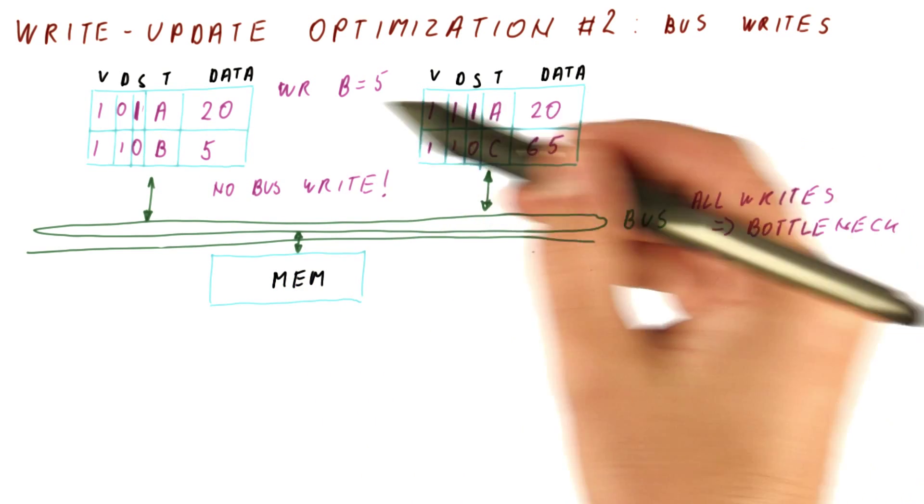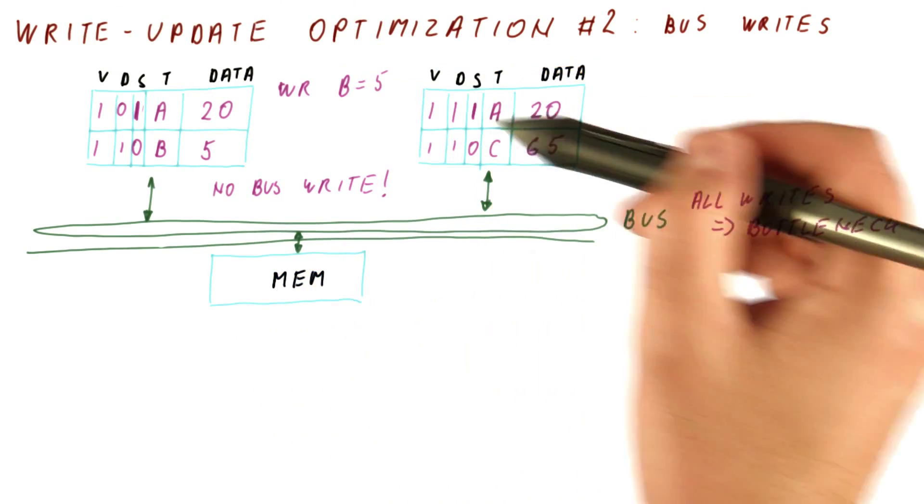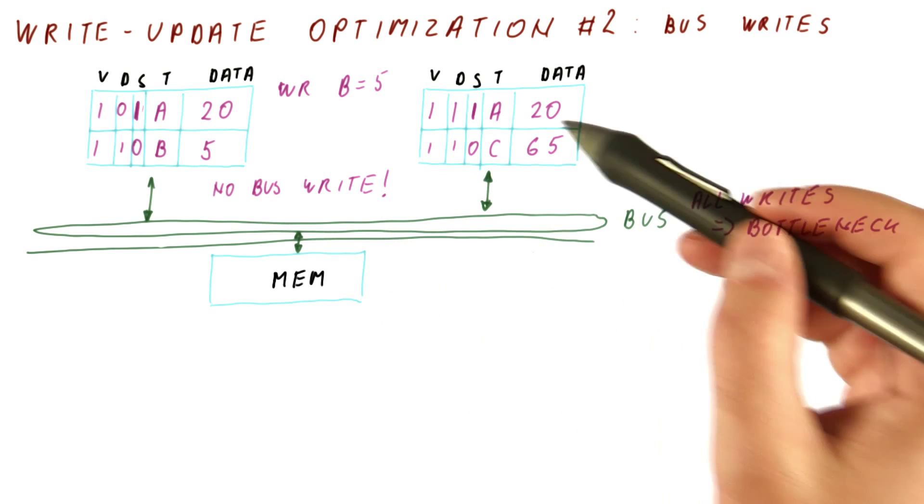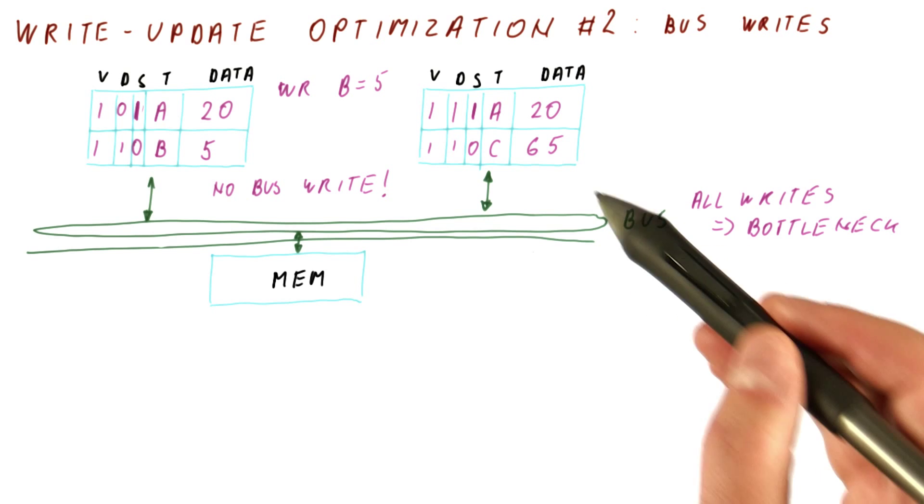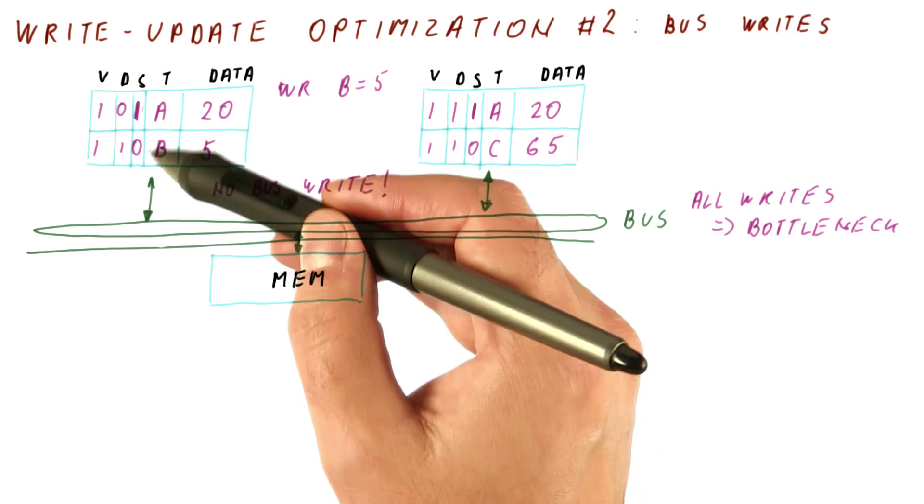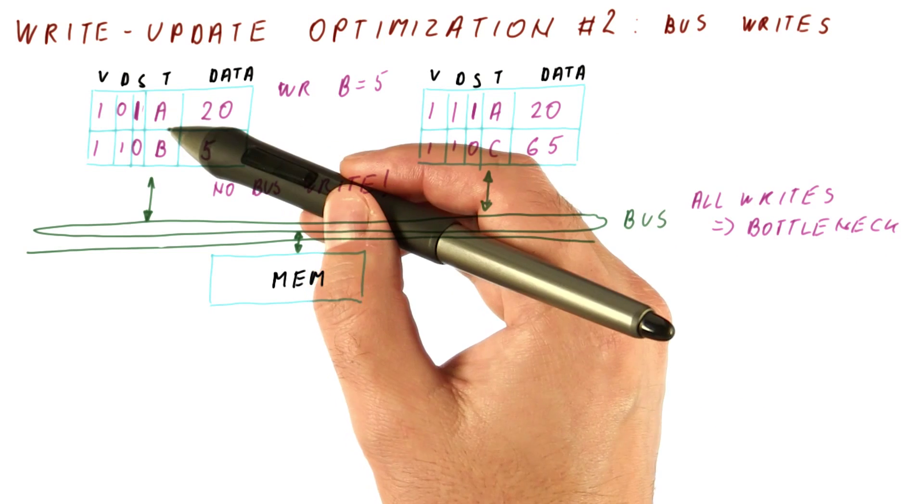But for data that is actually shared, we still get exactly the same write-update behavior as before. So this optimization will save us a lot of writes on the bus. It will save us all of the writes that are not necessary to maintain coherence among multiple copies of the same block in different caches.